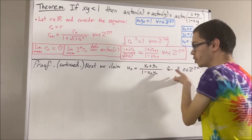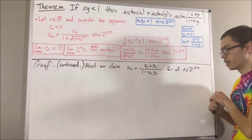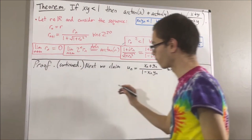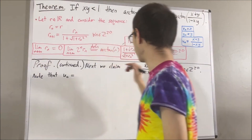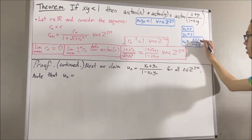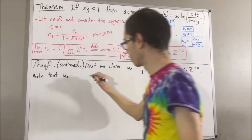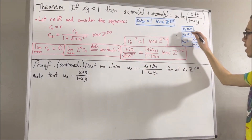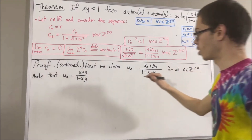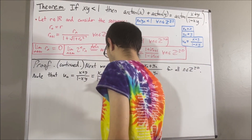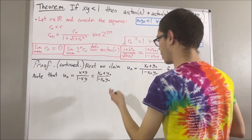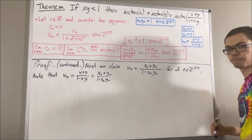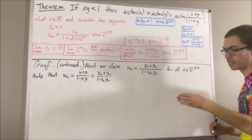We're going to prove this using induction. Clearly the base case is already done, because we know that u0 by definition is equal to x plus y all over 1 minus xy. But x0 is equal to x and y0 is equal to y, so we have this. And so we have shown that this is true in the case where n is equal to 0. This completes the base case.